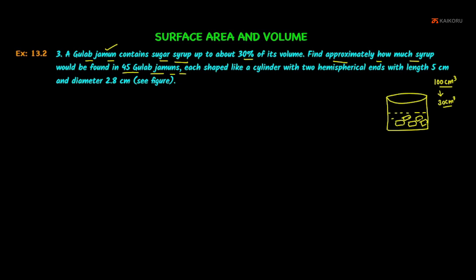The gulab jamun is shaped like a cylinder with two hemispherical ends attached. The total length is 5 cm.